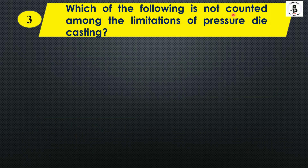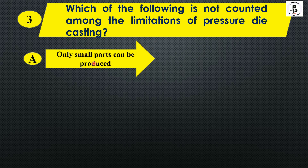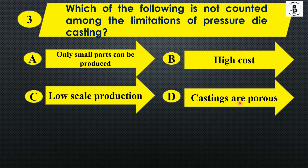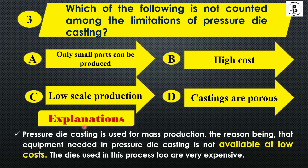Which of the following is not counted among the limitations of pressure die casting? Option A: only small parts can be produced, Option B: high cost, Option C: low scale production, and Option D: castings are porous. Pressure die casting is used for mass production. The equipment needed is expensive, and the dies used are also very expensive. Low scale production is not a limitation — it is not applicable here. So the right answer is Option C, low scale production.